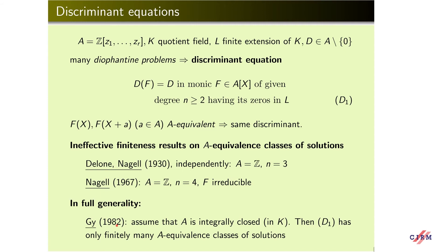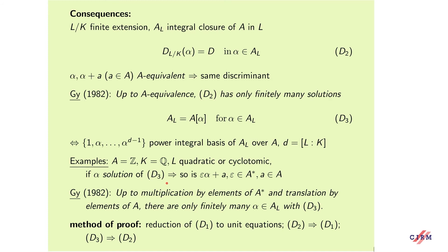Later it was proved in full generality that if we assume A is integrally closed in K, then the discriminant equation D1 has only finitely many A-equivalence classes of solutions. This result has several consequences. For example, if L is a finite extension of K and A_L is the integral closure of A in L, then the equation D2 concerning elements of A_L — where alpha and alpha+a (for a in A) are said to be A-equivalent — follows that up to A-equivalence, equation D2 has only finitely many solutions in A_L.